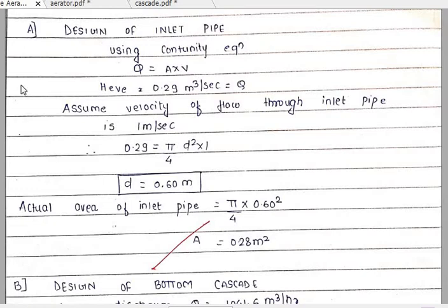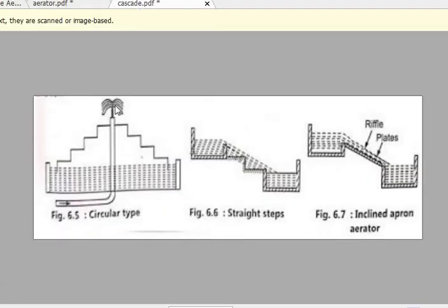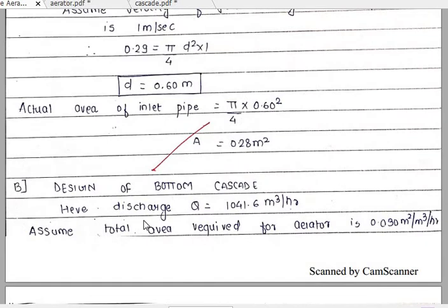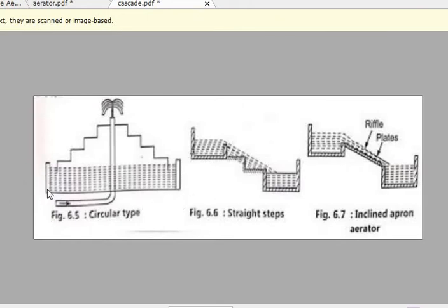To summarize the inlet pipe design: we have simplified the inlet pipe by substituting the velocity of water through the pipe as 1 meter per second and we get the diameter of the inlet pipe as 0.6 meter, and the total area of the inlet pipe as 0.28 meter square. Now moving to the second part — the design of the bottom cascade.